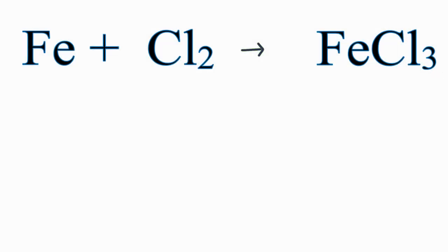To balance this equation, let's write down first how many atoms we have on each side. On the reactant side, Fe, we have one, and chlorine, we have two.